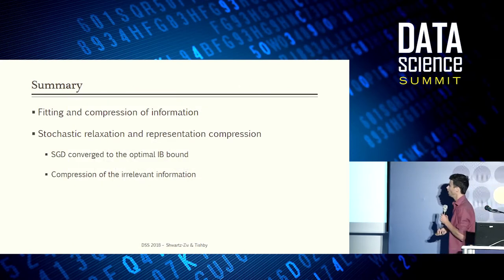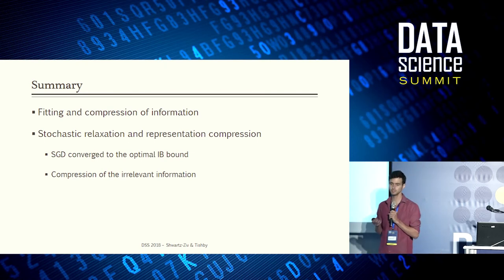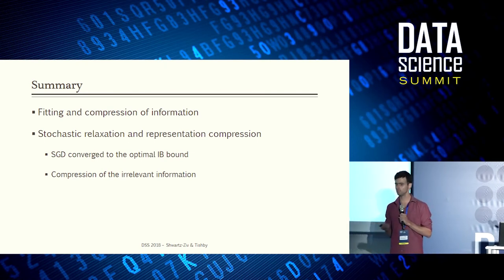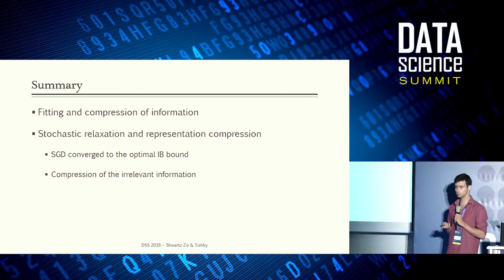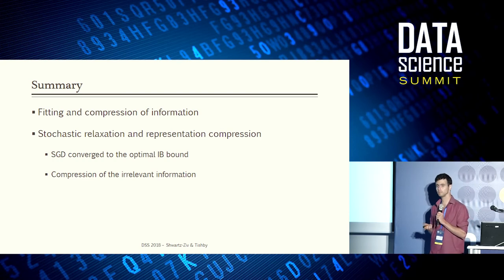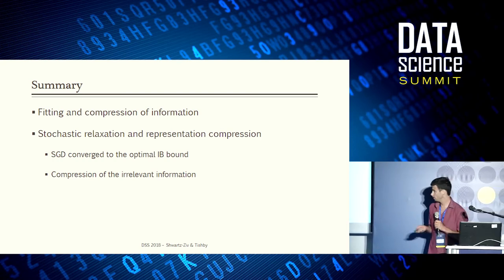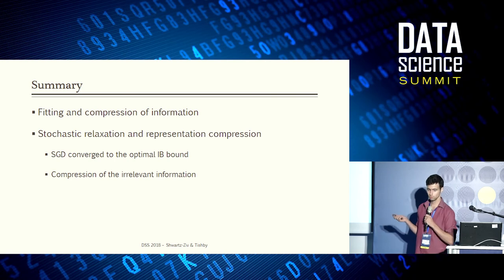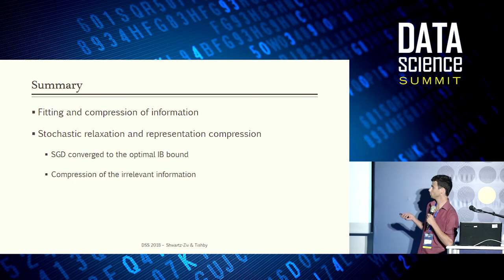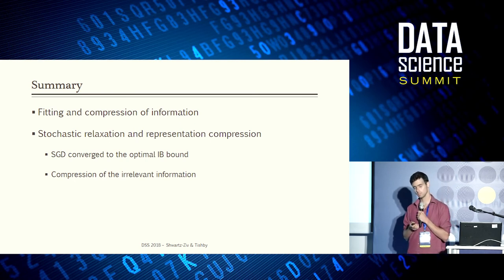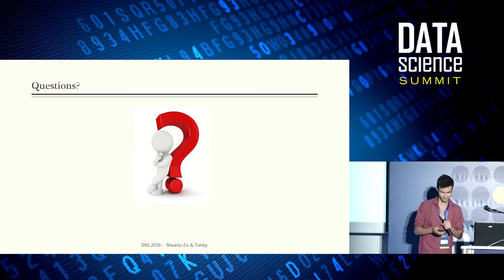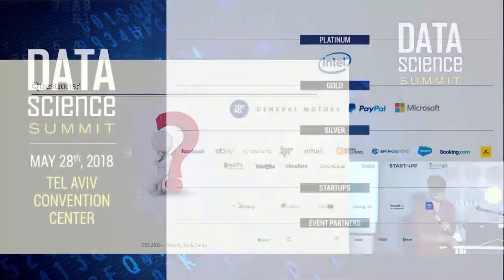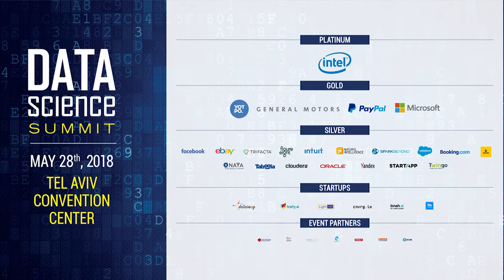To summarize: we saw two distinctive phases both in the information plane and in the gradients — fitting and compression. We tried to explain the connection between them and how the SGD converges to the optimal information bound, and in which directions we compress our information. Thank you.